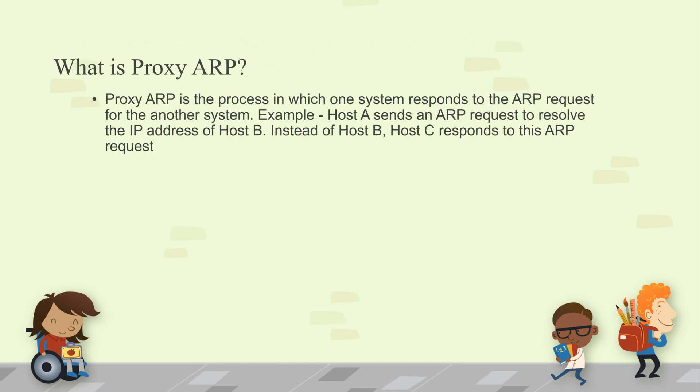What is a Proxy ARP? Proxy ARP is the process in which one system responds to an ARP request on behalf of another system. For example, Host A sends an ARP request to resolve the IP address of Host B. Instead of Host B, Host C responds to the ARP request. It works similarly to how a proxy operates — in the same way, Proxy ARP works.